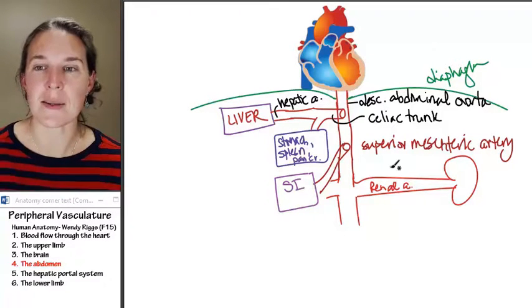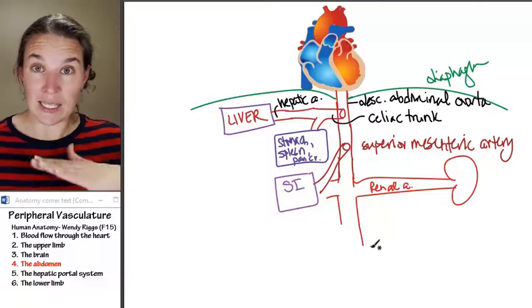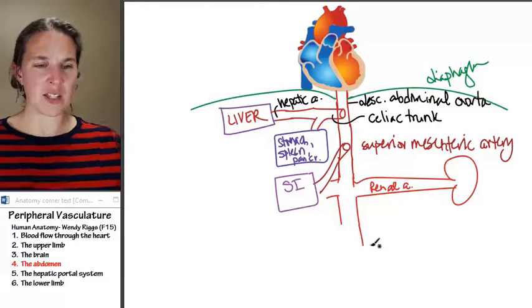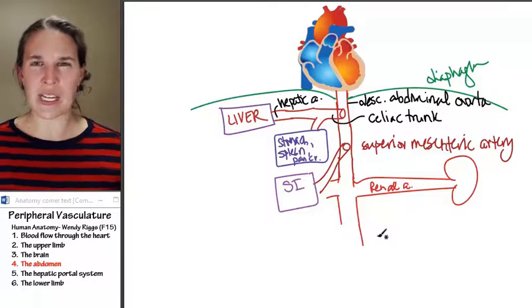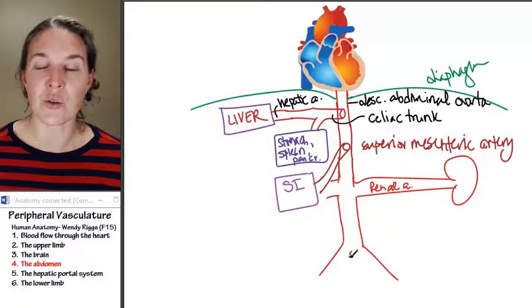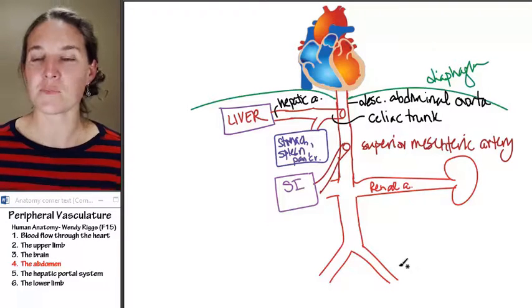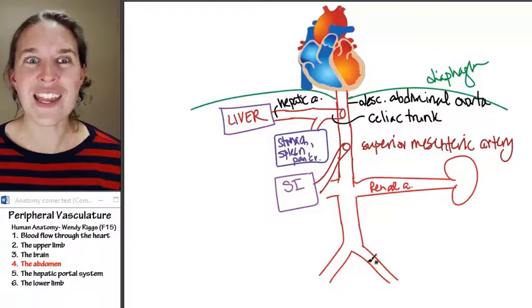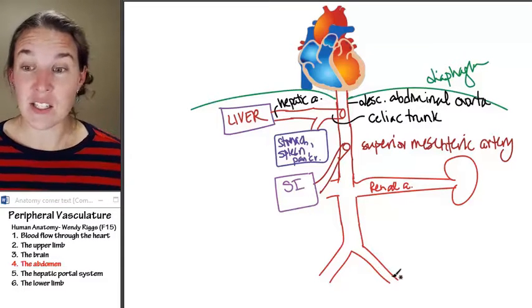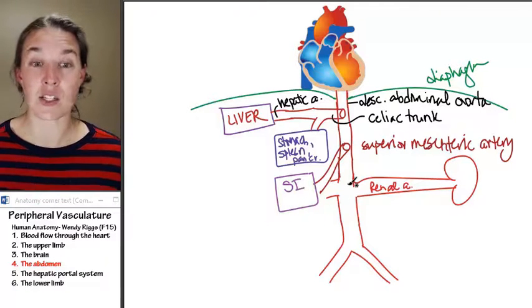This is my descending abdominal aorta, ultimately at level L3. So imagine this guy going down until it reaches about L3. At about that level, this guy branches into two different arteries. Now it looks like a little man, a little cyclops. What do you think these giant branches are going to do? Feed your legs because they are feeding your legs. And we'll talk about those guys when we get into the lower limb.